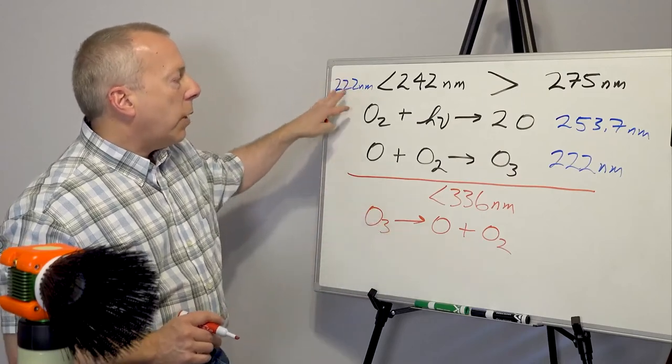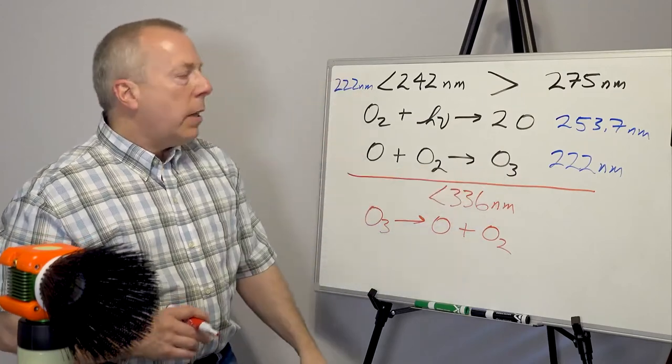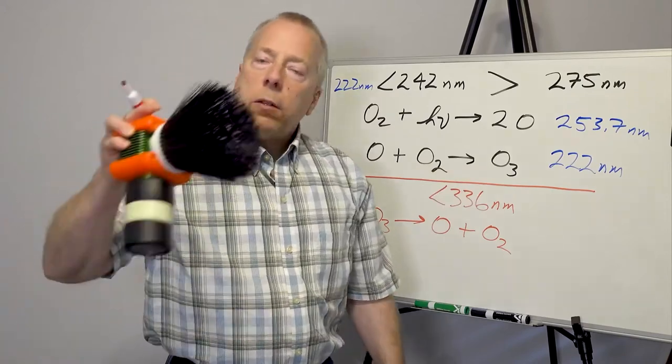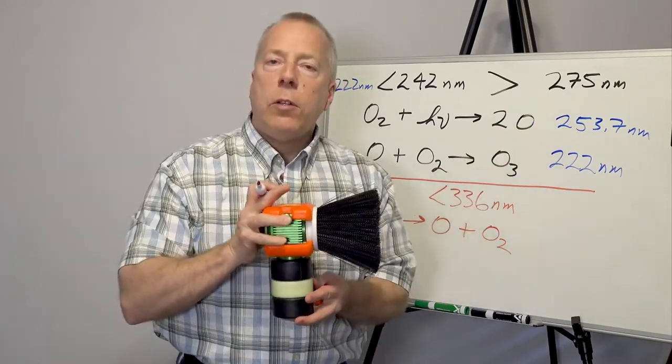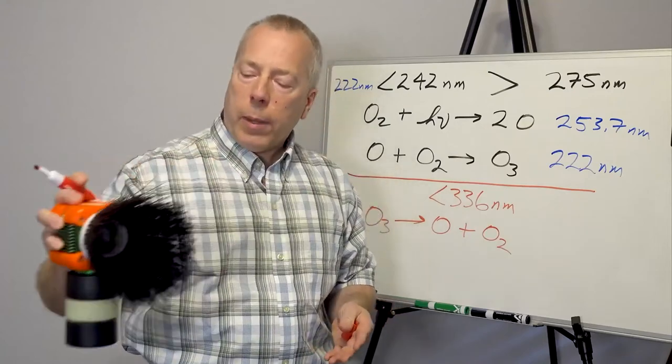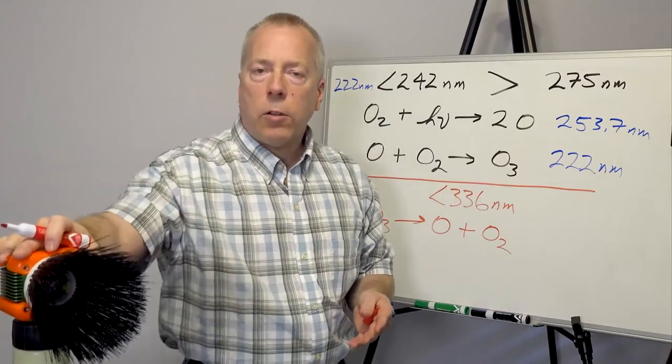But the 222 excimer actually generates ozone. Our UVC body light does not. So it's sitting at 275 nanometers, and there's no ozone generated by operation of this particular light.